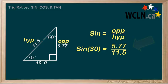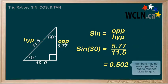And if we divide these, that is 5.77 divided by 11.5, we come out with 0.50, with a slight bit of rounding.